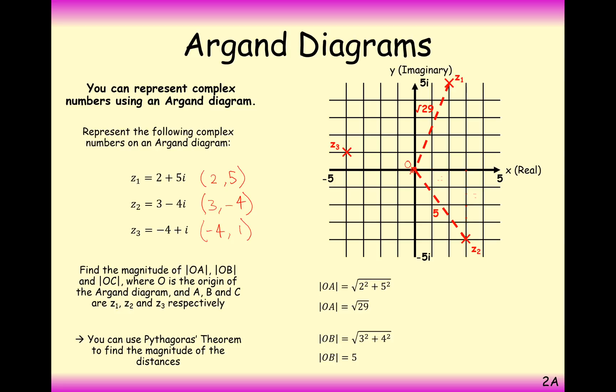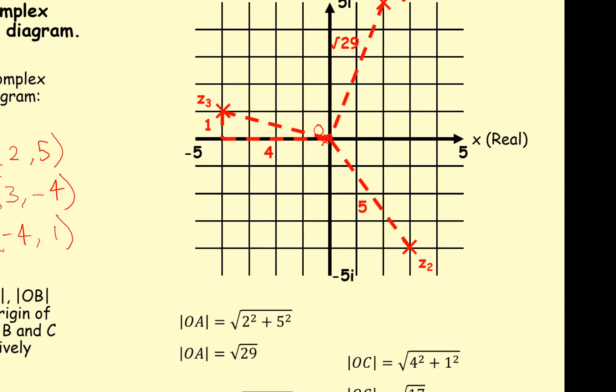And very similarly for z3, draw a line between 0 to z3, work out the distance between these two coordinates, and that will help you find the magnitude of that coordinate. So that would be the square root of 17.